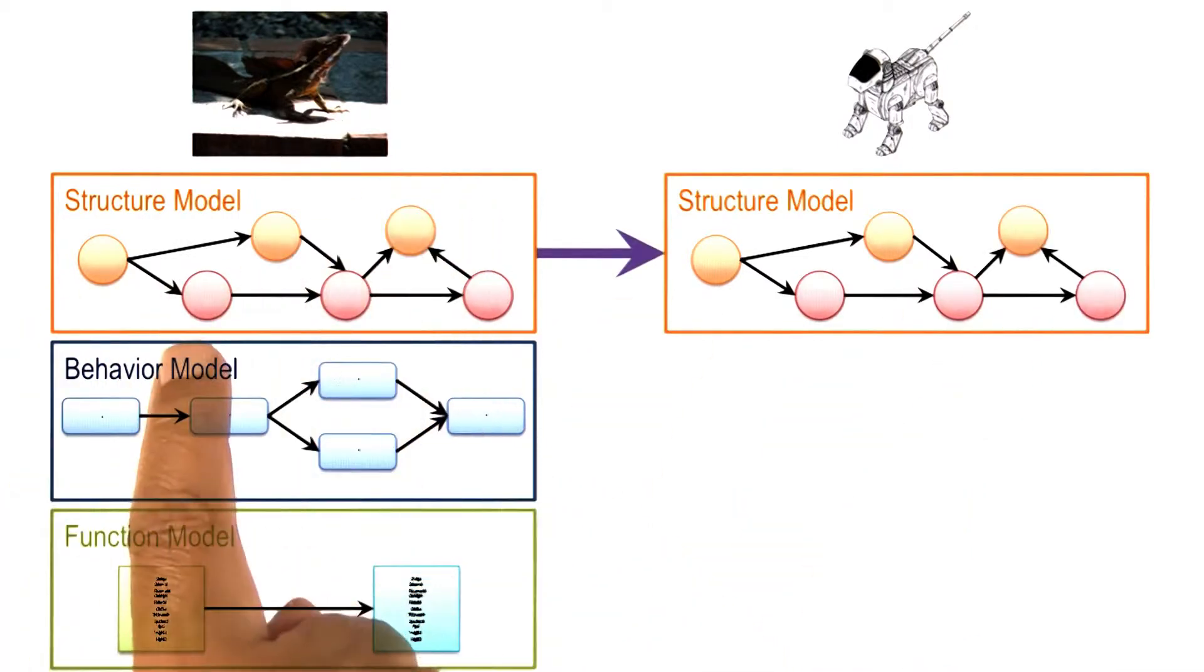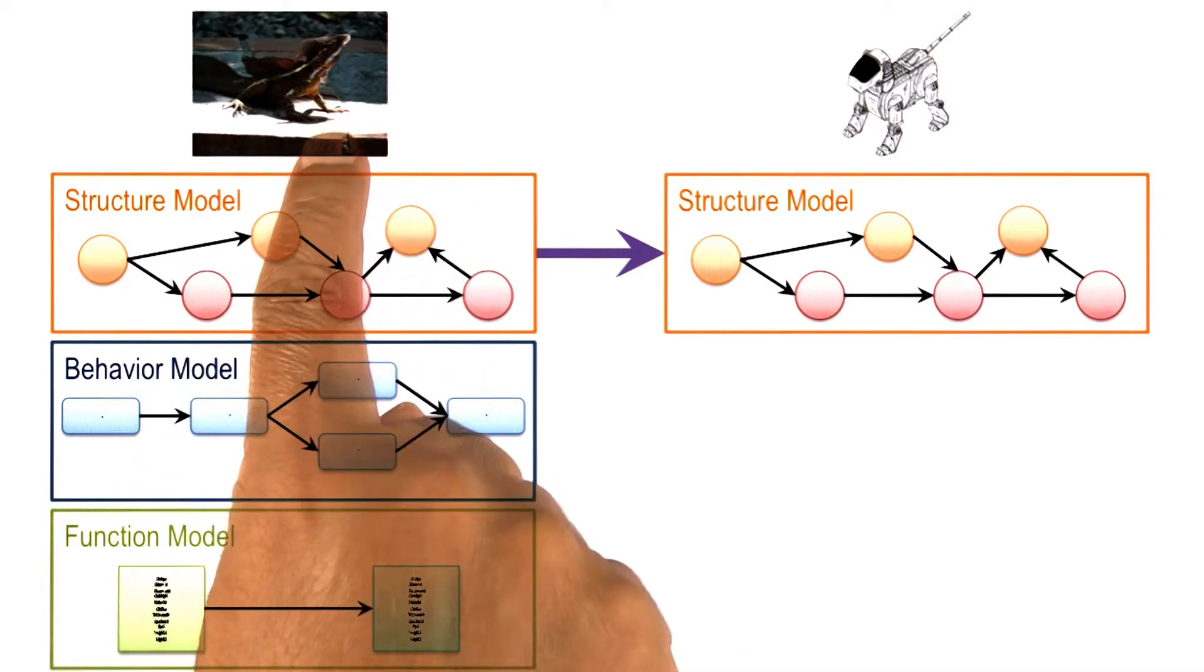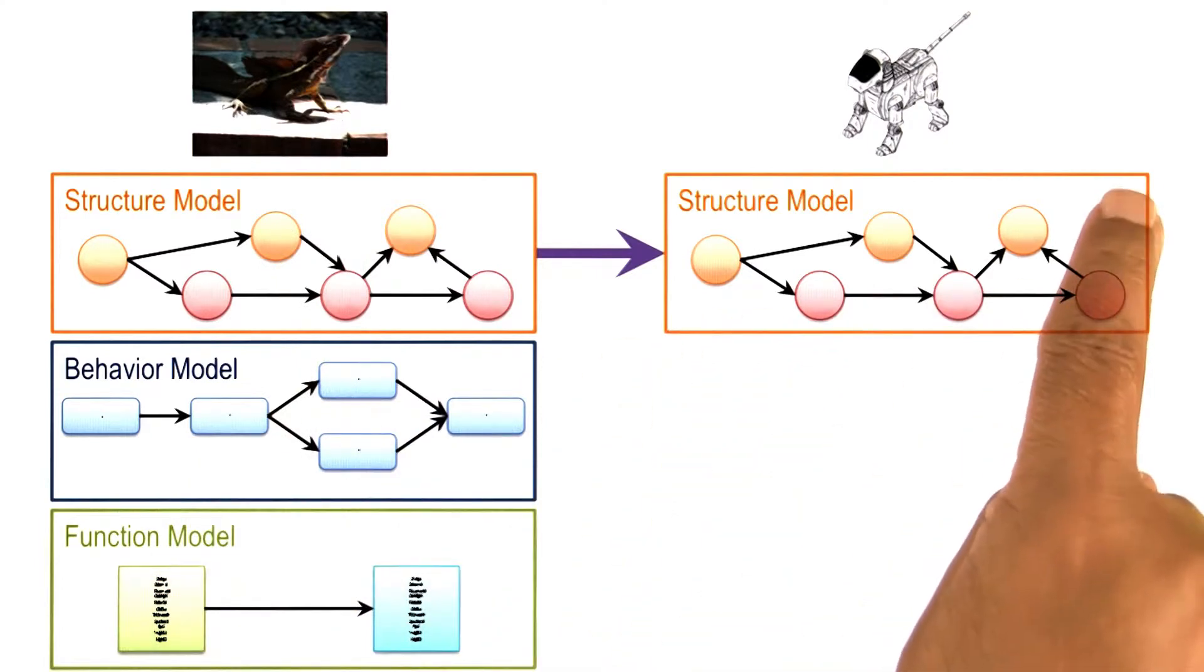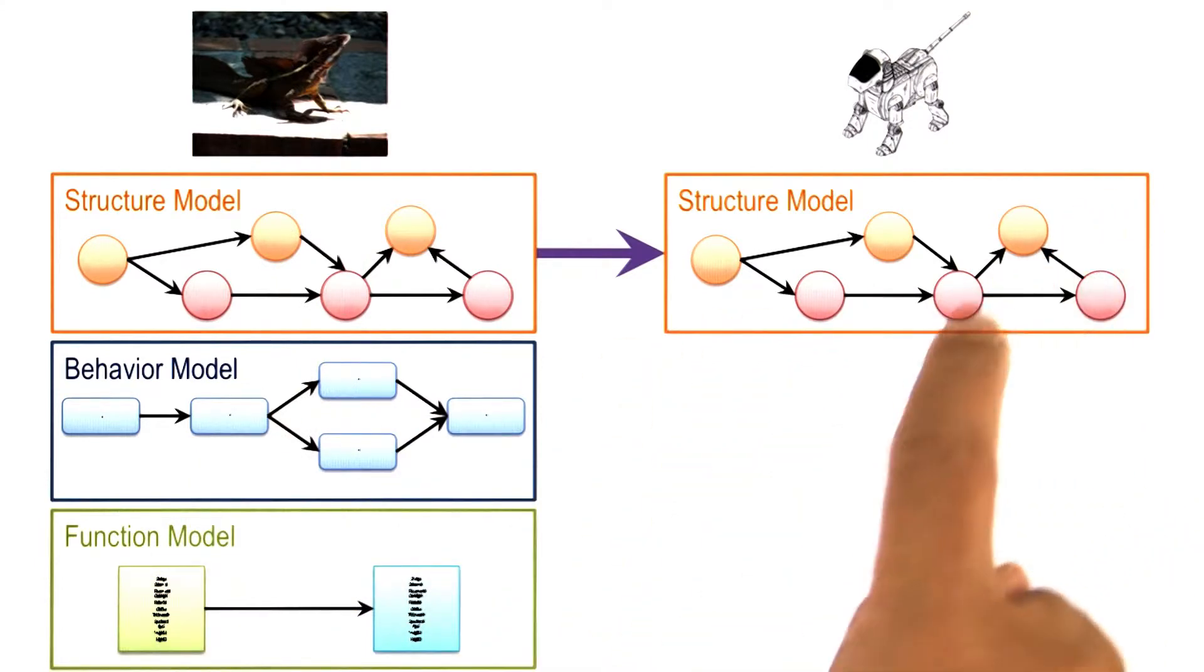We can transfer specific features of the structure of the basilisk lizard, for example, the shape of its feet, to this model of the robot that can walk on ground, in order to convert it into a robot that can walk on water.